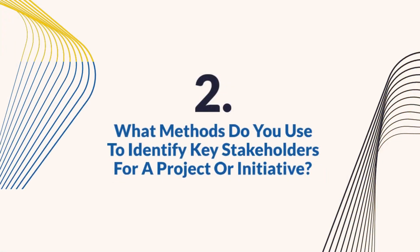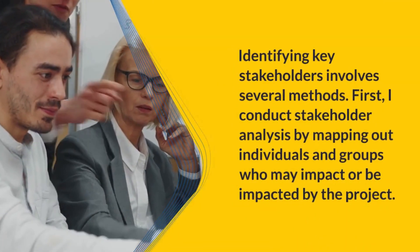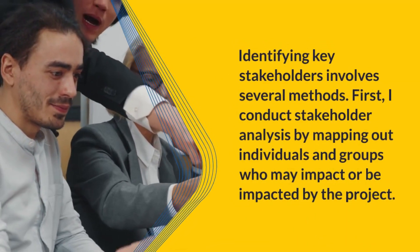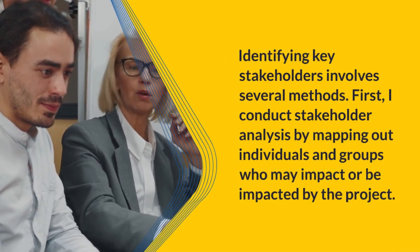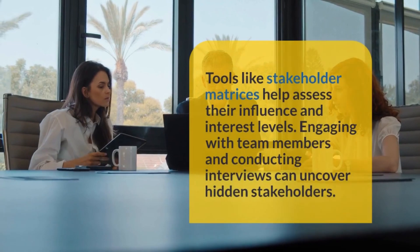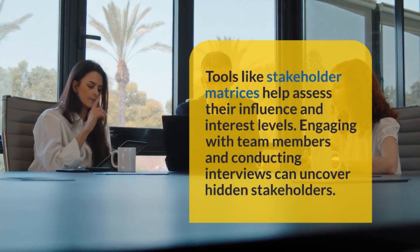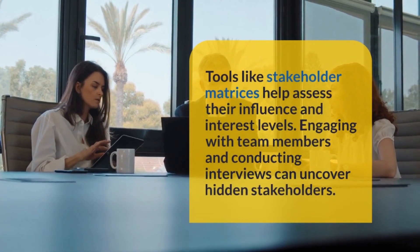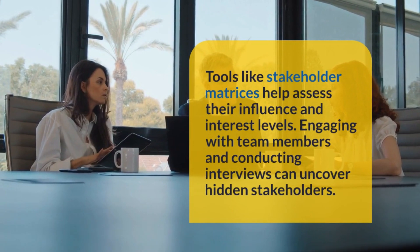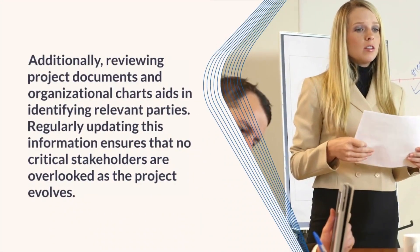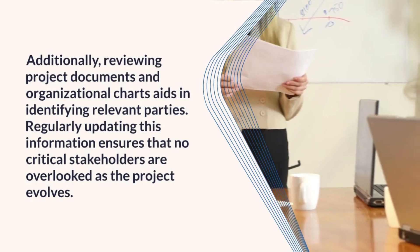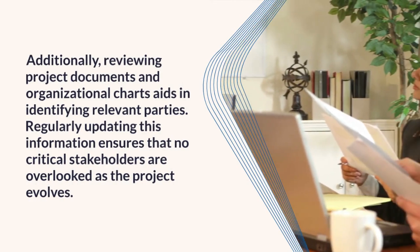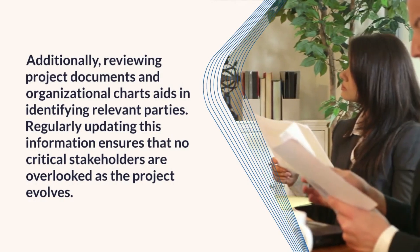Question 2: What methods do you use to identify key stakeholders for a project or initiative? Identifying key stakeholders involves several methods. First, I conduct stakeholder analysis by mapping out individuals and groups who may impact or be impacted by the project. Tools like stakeholder matrices help assess their influence and interest levels. Engaging with team members and conducting interviews can uncover hidden stakeholders. Additionally, reviewing project documents and organizational charts aids in identifying relevant parties. Regularly updating this information ensures that no critical stakeholders are overlooked as the project evolves.